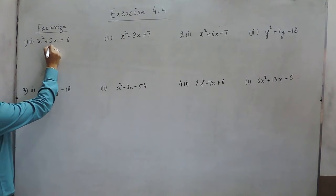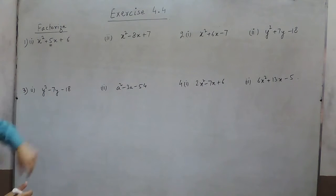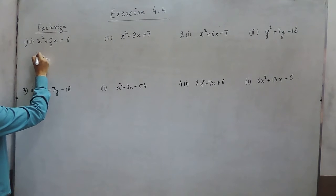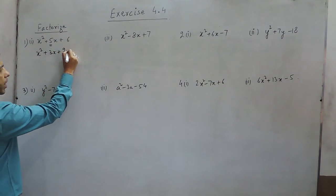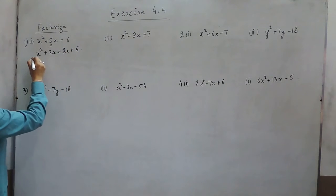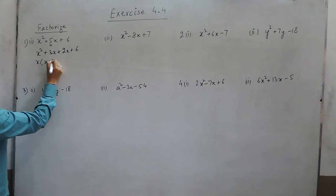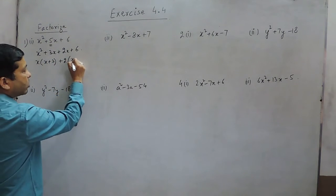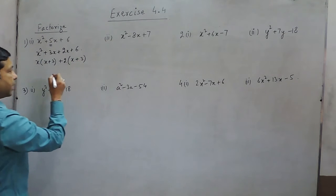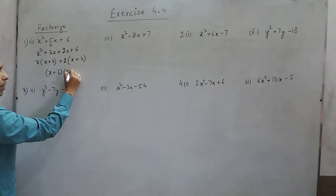We have to divide this into two factors so that the sum is 5 and the multiplication is 6. So we write it as x squared plus 3x plus 2x plus 6. Taking x common in the first two terms gives x plus 3, and taking plus 2 common in the last two terms also gives x plus 3. So the factors are x plus 3 and x plus 2.